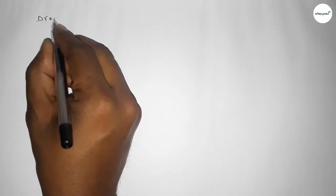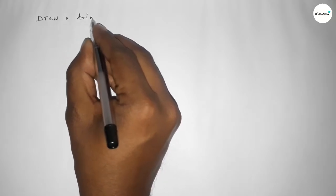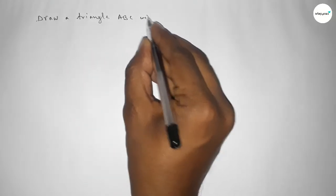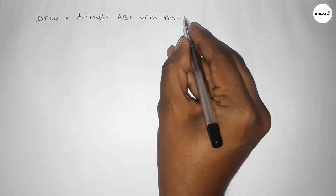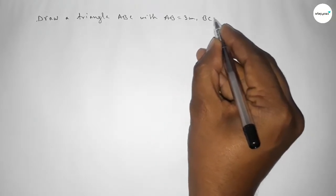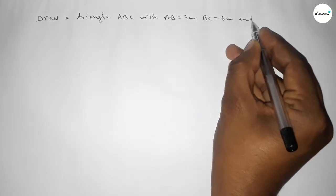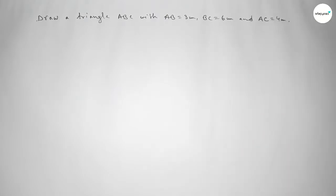Hi everyone, welcome to Essay Share Classes. Today in this video we have to draw a triangle ABC with AB equal to three centimeters, BC equal to six centimeters, and AC equal to four centimeters by using a compass. So let's start the video.